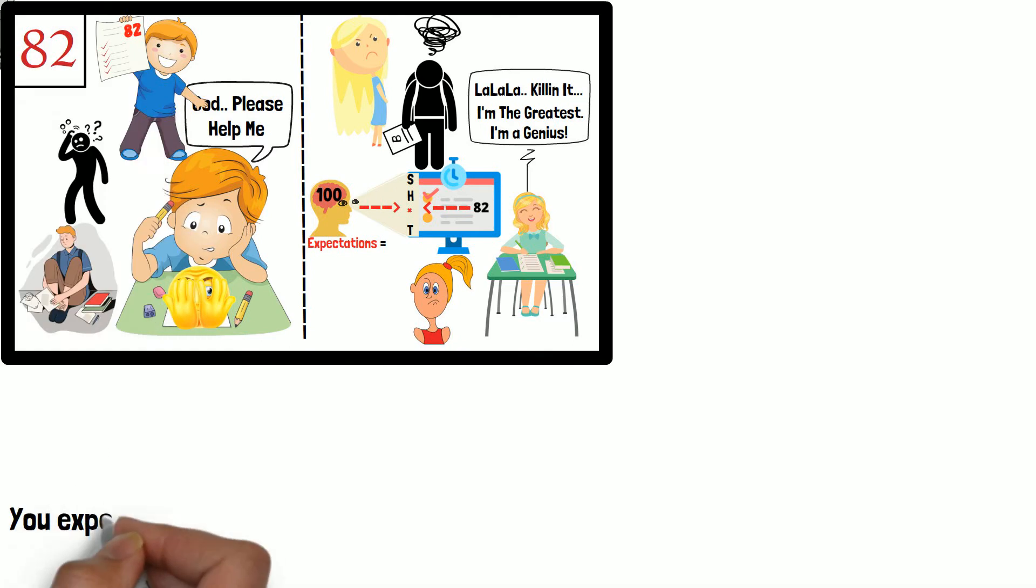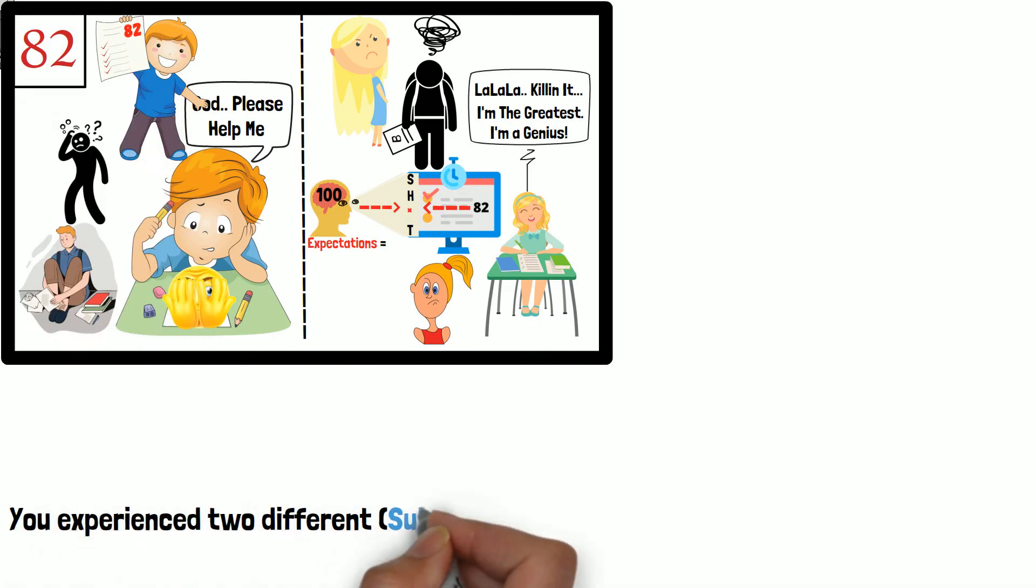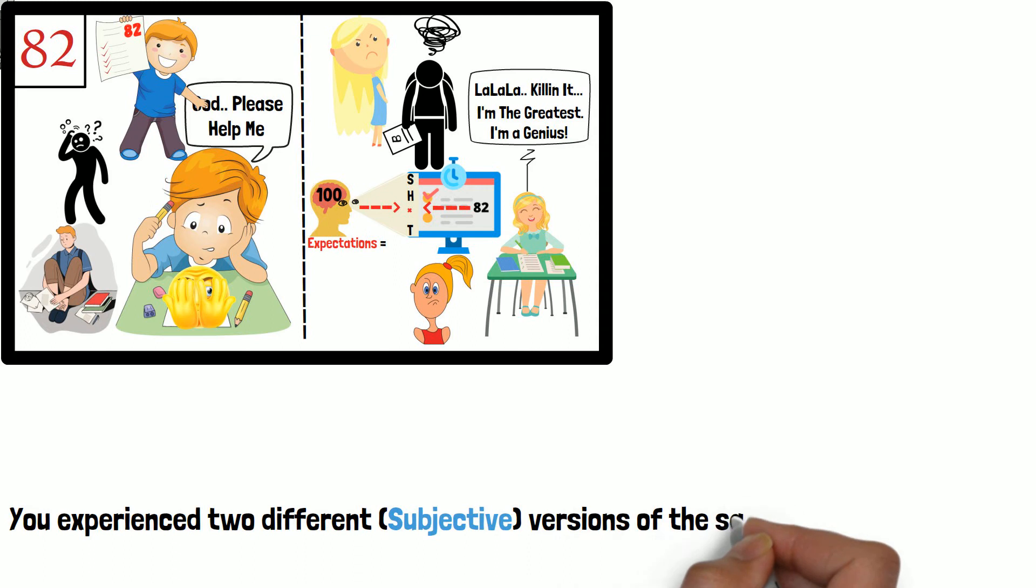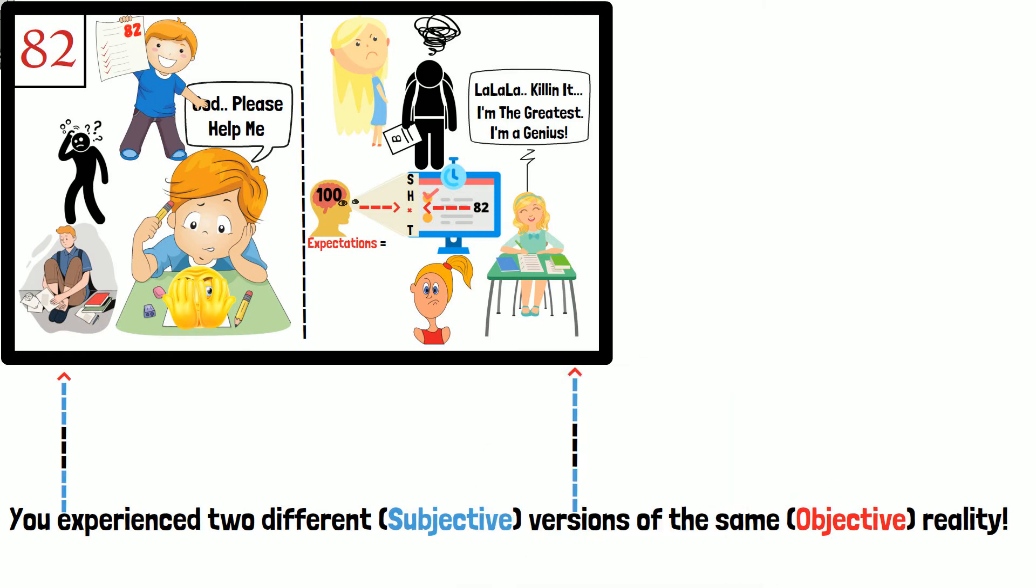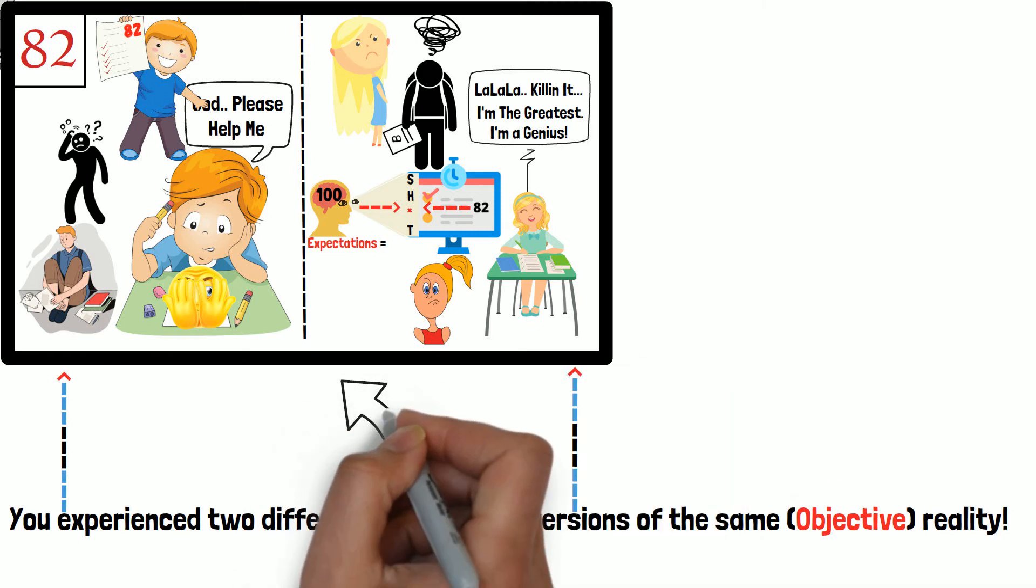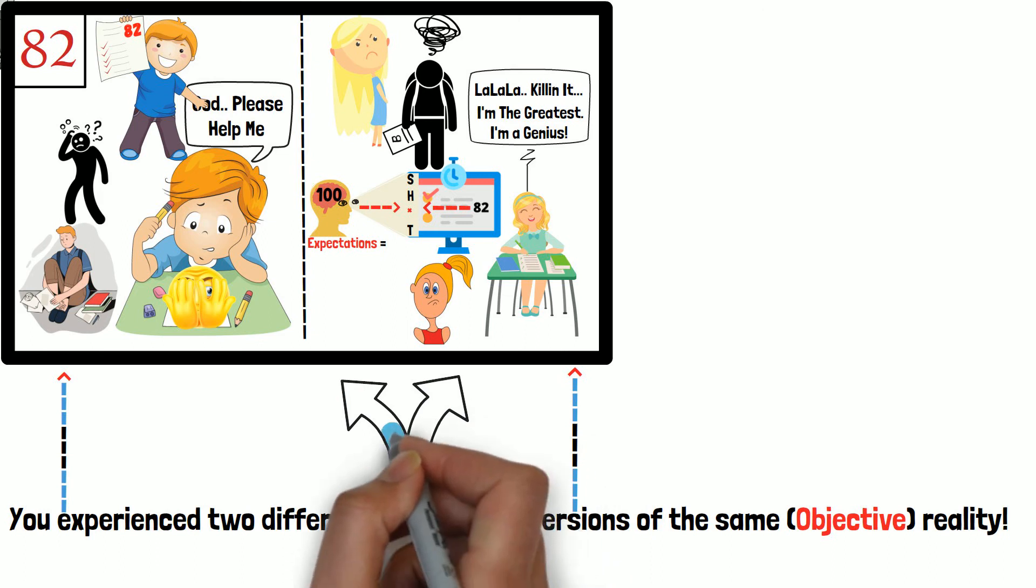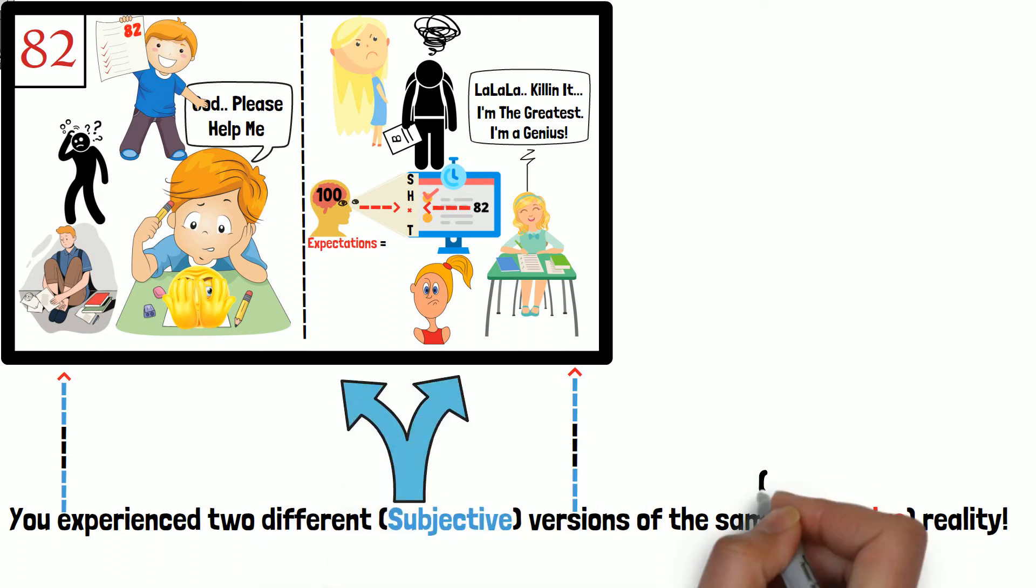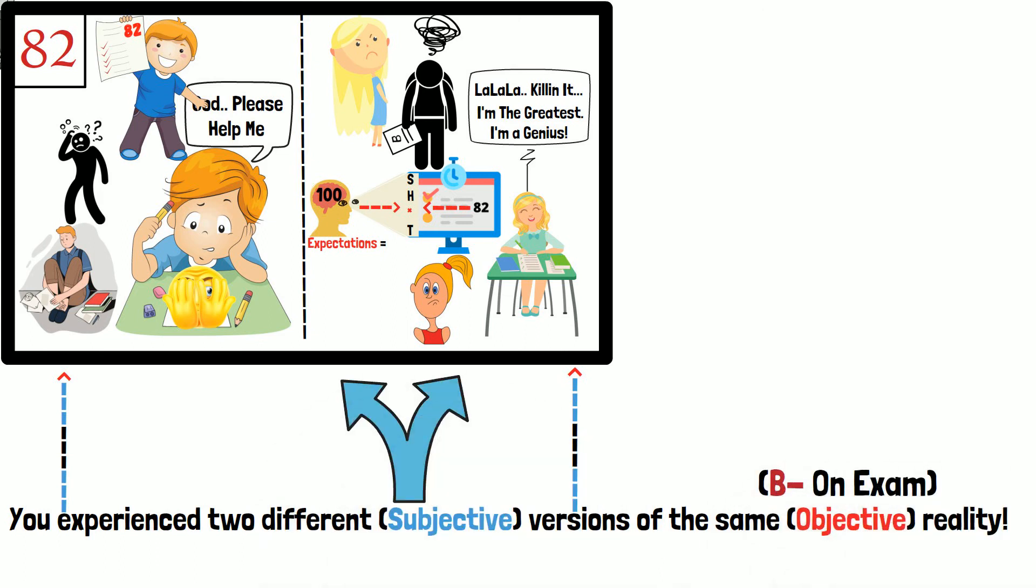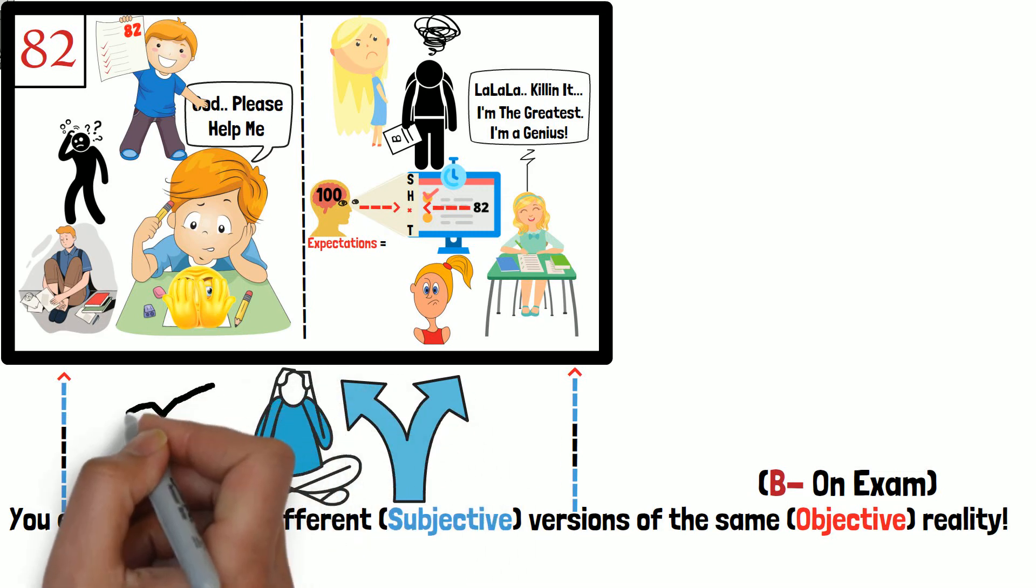Notice how the exact same outcome on your exam creates two radically different versions of reality that you find yourself living in. Nothing objectively changes in our examples. You take a psychology exam and get a B minus on it. Yet the life you go on living after receiving the grade is dramatically different. And in the case where your expectations were set extremely high, you let some incorrect answers on your study guide cause you to fail the course.